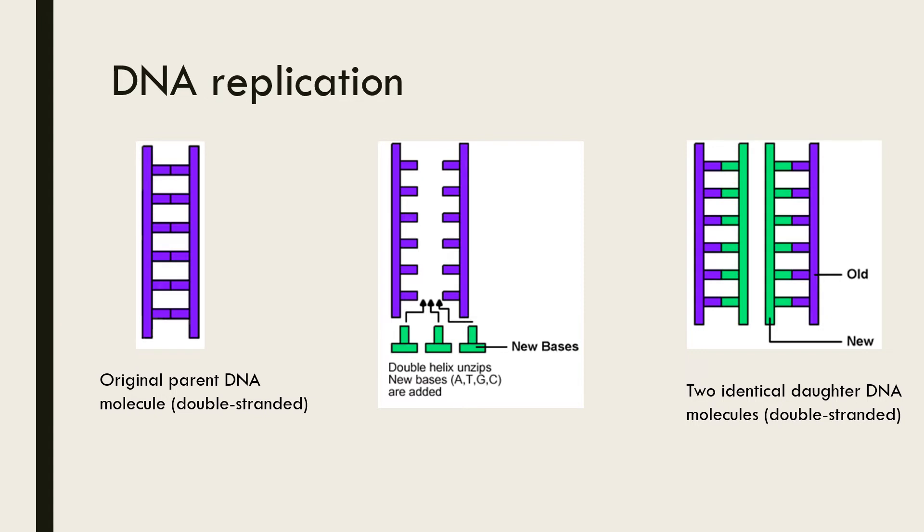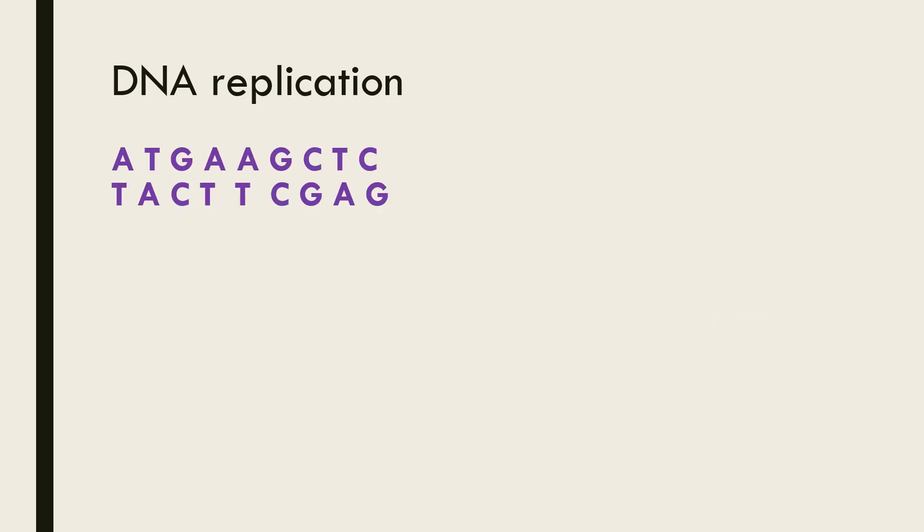To understand this better, let's look at this in terms of the sequence of nitrogenous bases. Here is the original DNA molecule represented by its sequence of bases in a section of each strand. In reality, of course, there would be many more bases. Although not shown in the diagram, there are hydrogen bonds between the complementary bases.